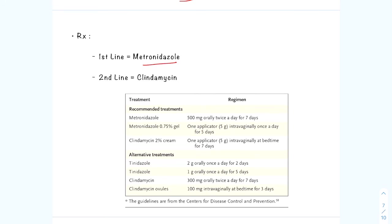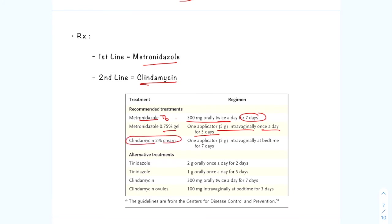Regarding treatment: if the patient cannot tolerate metronidazole, then clindamycin proves to be a reasonable second-line treatment. The metronidazole regimen is 500 mg orally twice a day for seven days. The second-line treatment is clindamycin cream inserted intravaginally at bedtime for seven days.